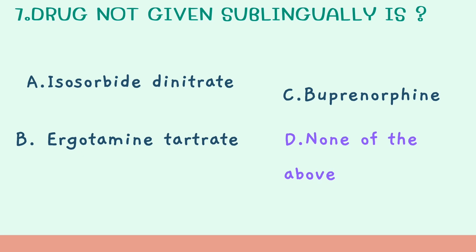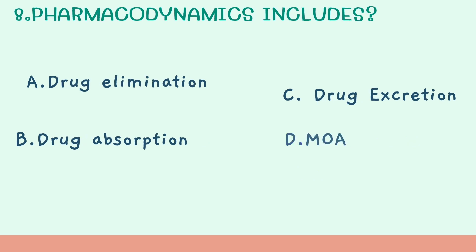Eighth question: pharmacodynamics includes - Option A: drug elimination, Option B: drug absorption, Option C: drug excretion, Option D: mechanism of action. The correct answer is Option D, mechanism of action. Pharmacokinetics covers absorption, distribution, elimination, and excretion. Pharmacodynamics refers to what the drug does to the body, which is why mechanism of action belongs to pharmacodynamics.